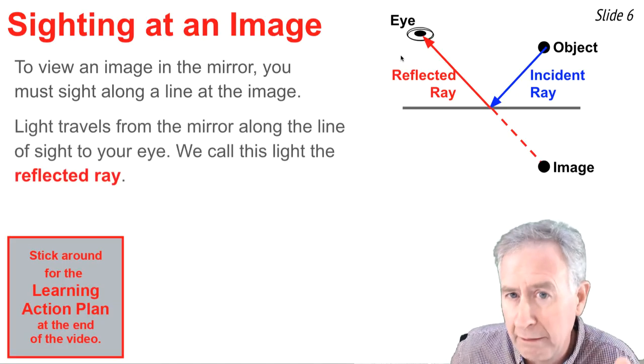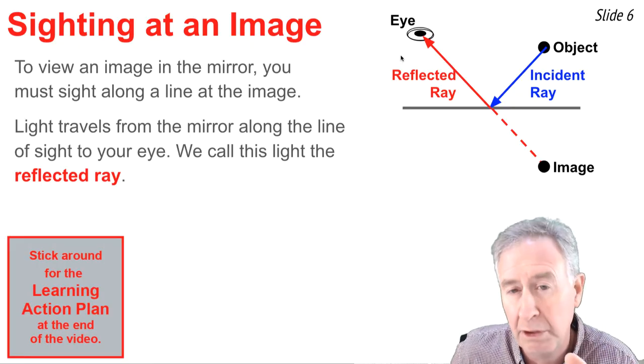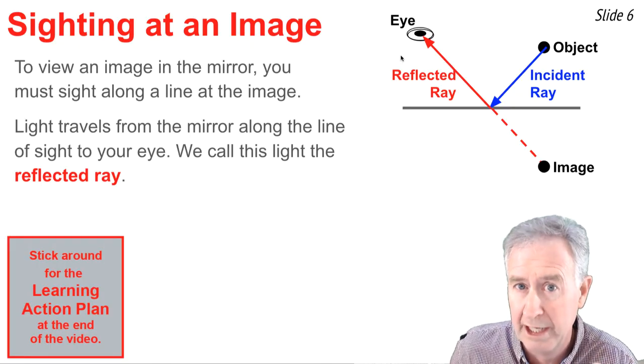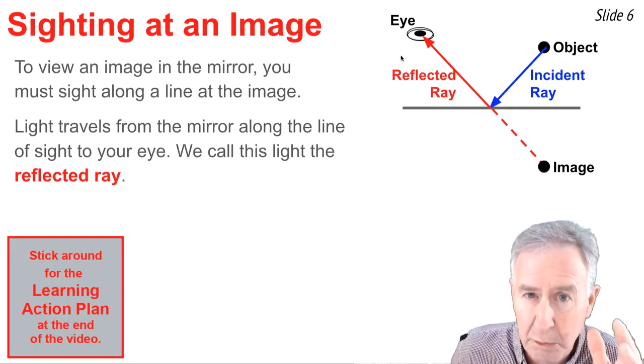And when you do, light will travel from the mirror surface to your eye. And we refer to this light ray, represented by the red arrowed line, as the reflected light ray.